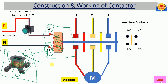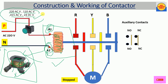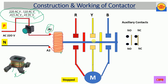The operating voltage of the contactor coil is available in 220 volt AC, 110 volt AC, 415 volt AC, and 24 volt DC. These are the operating voltages of this contactor coil.